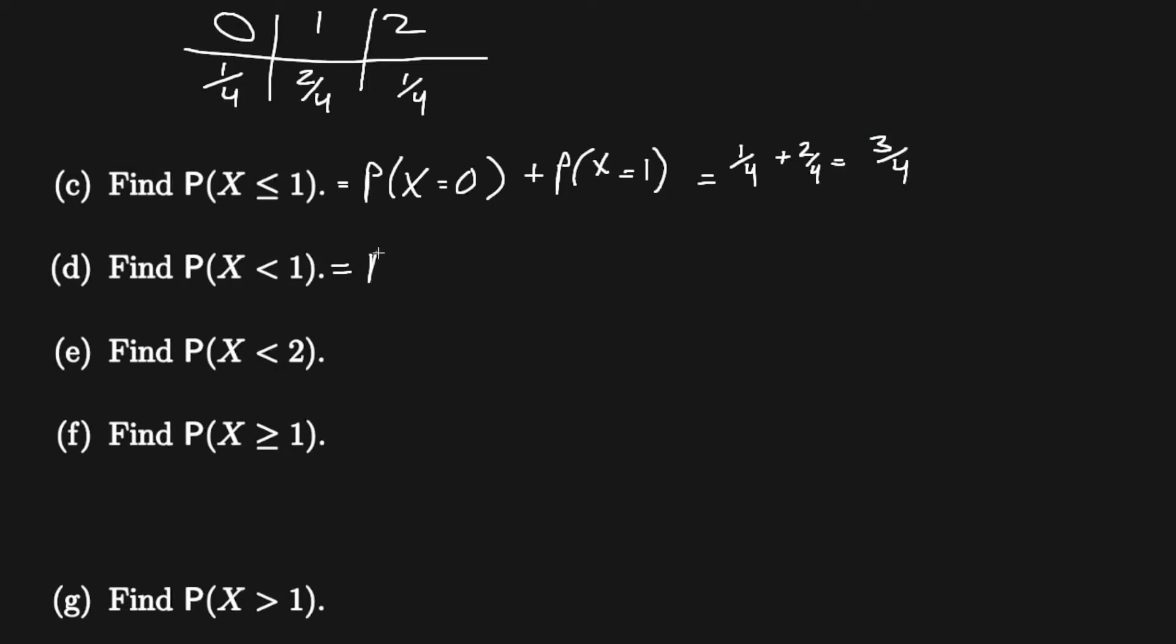Now we can move on to d. Part d is where X is less than one, which is just the probability of X equals zero because it's not including one, which is just one fourth.